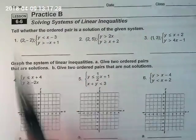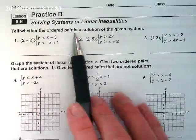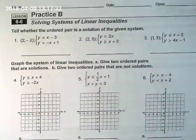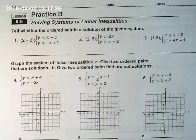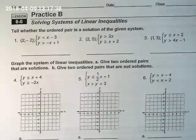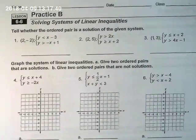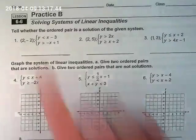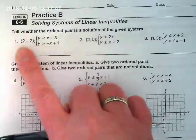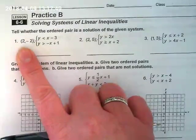For number one through three, the directions say to tell whether the ordered pair is a solution of the given system. Our answer is going to be a single word. Yes or no? And in order for it to be a yes, if I graphed this and shaded, this point would be in the double shaded area.